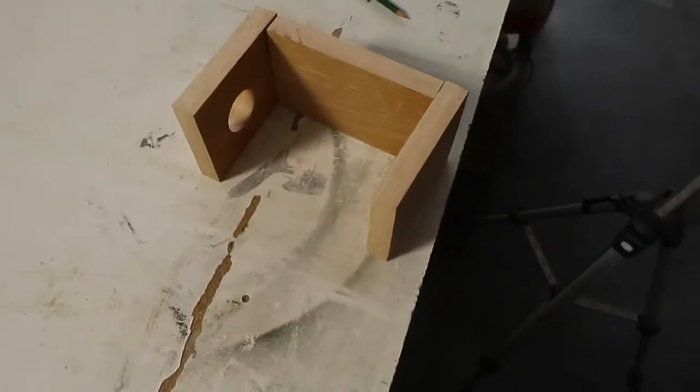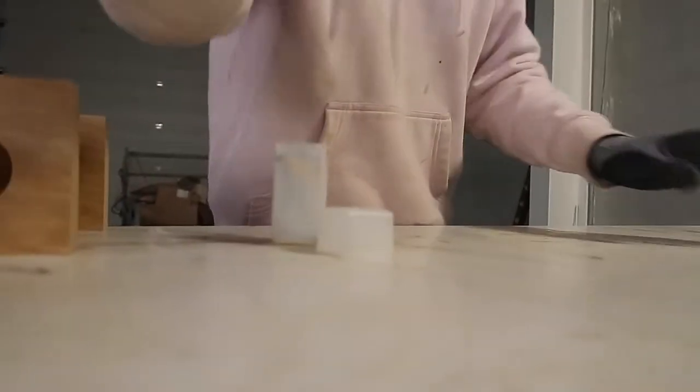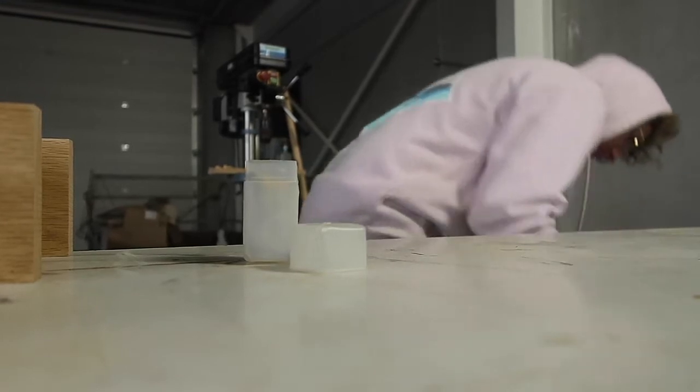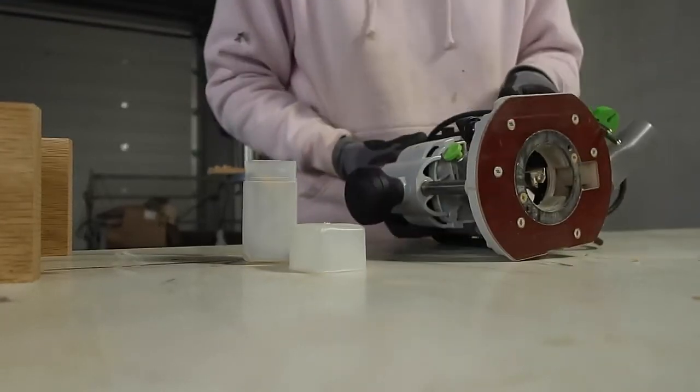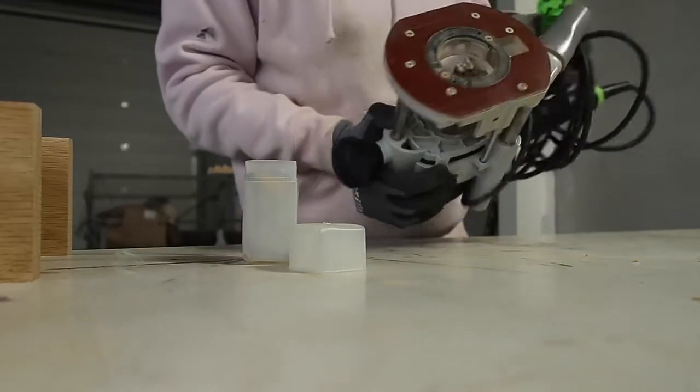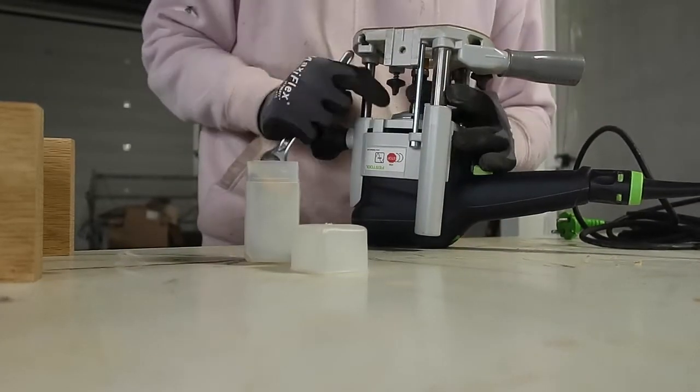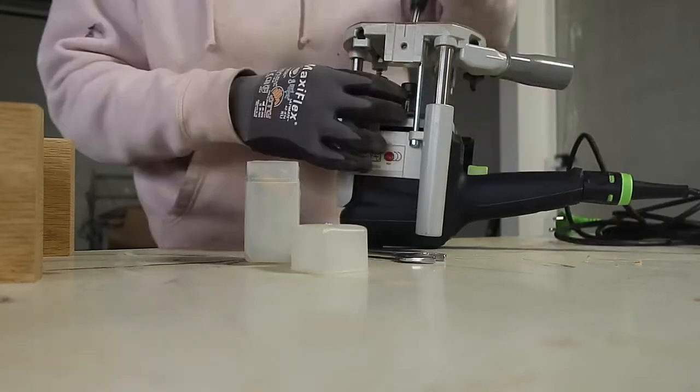The next step was to use a little rabbiting bit in our router to make a rabbit around the hole, since the thread wasn't deep enough to cover the whole thickness of the wood. We did it this way to recess the lamp holder into the plank a little bit.